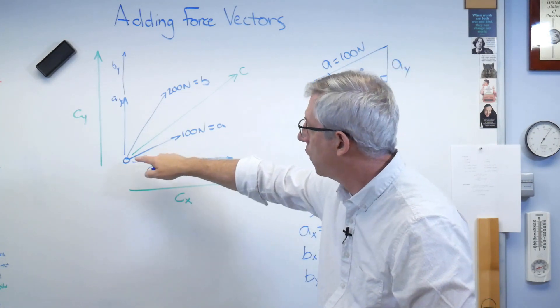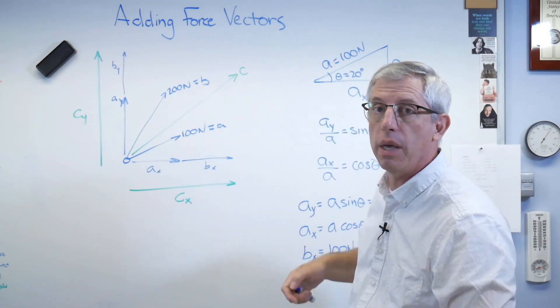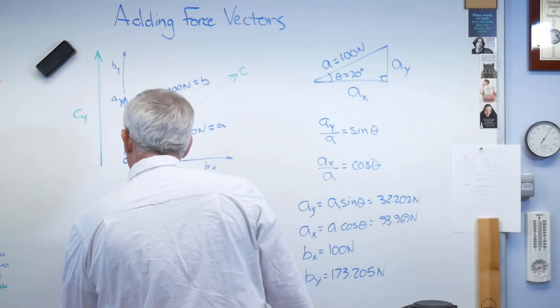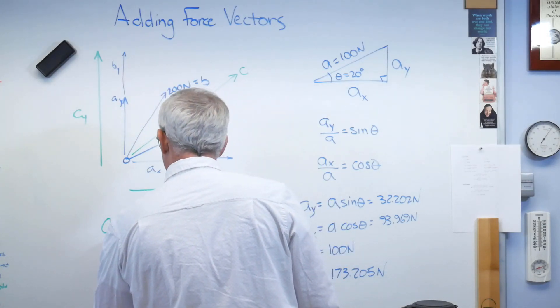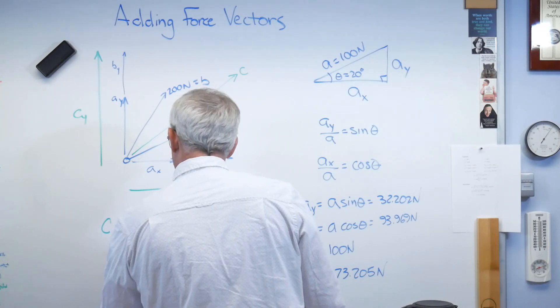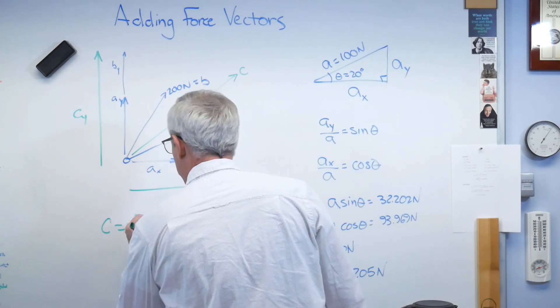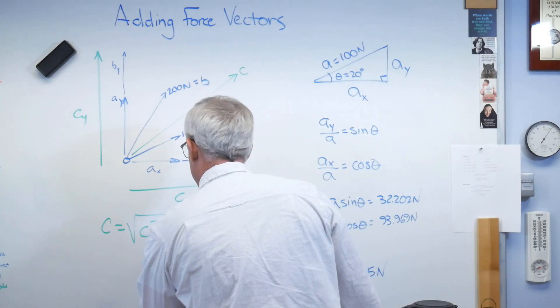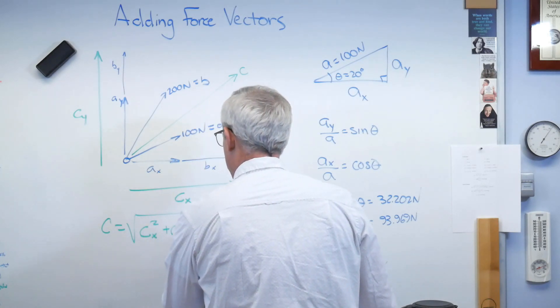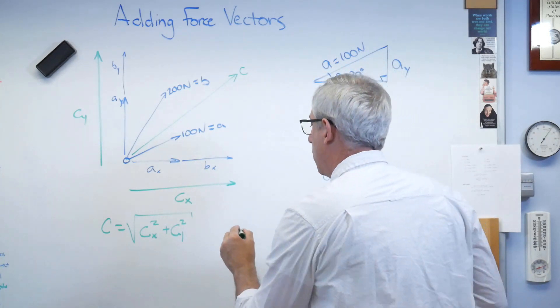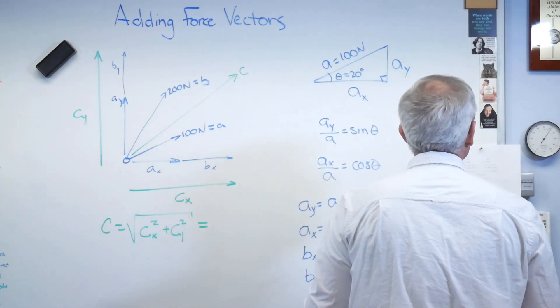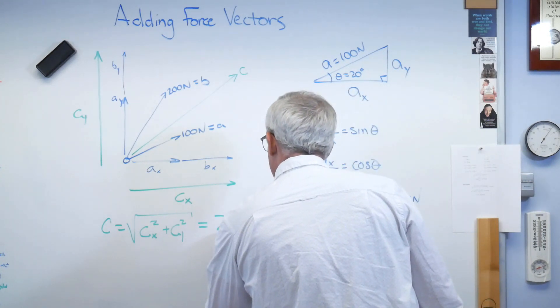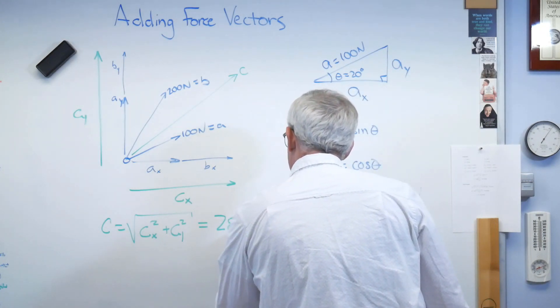Now, for completeness, if I want to know the magnitude of C, well, C, using the Pythagorean theorem, is Cx squared plus Cy squared. Let's just figure out what that is. It looks like it's going to be 283.975 newtons.